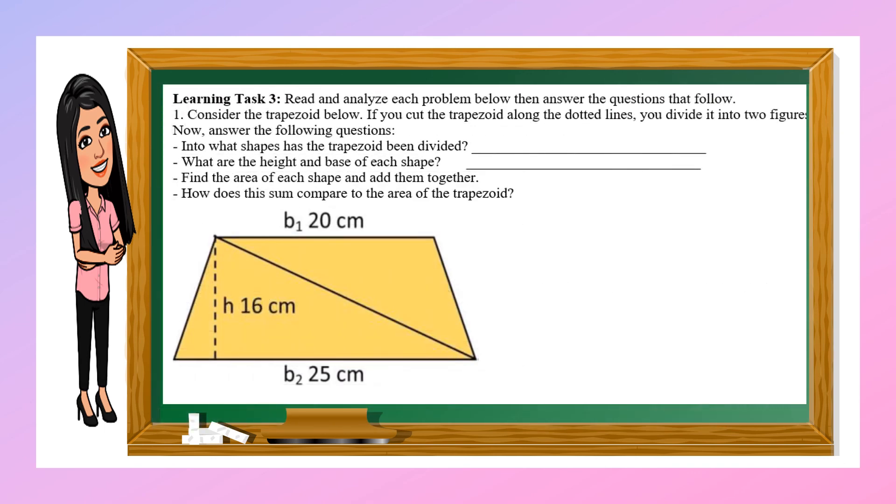And for learning task 3, read and analyze each problem below then answer the questions that follow. Consider the trapezoid below, so we have the figure here, the trapezoid. If you cut the trapezoid along the dotted lines, you divide it into two figures. Now you're going to answer the questions.